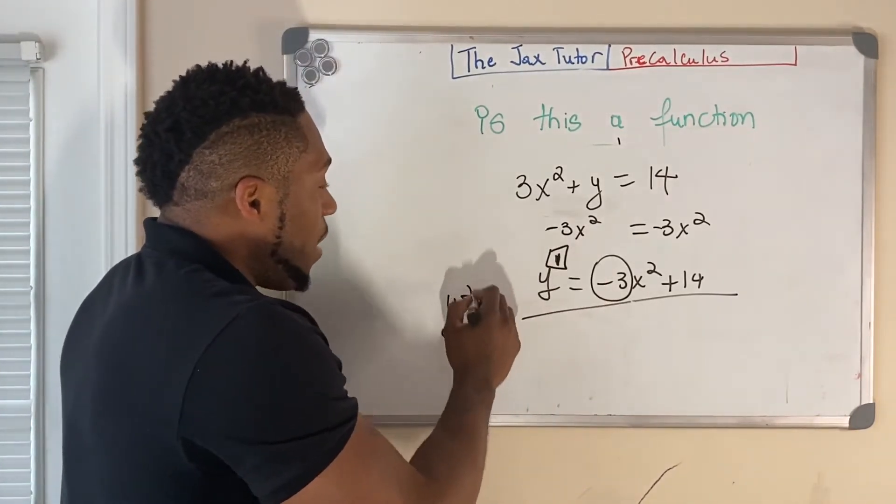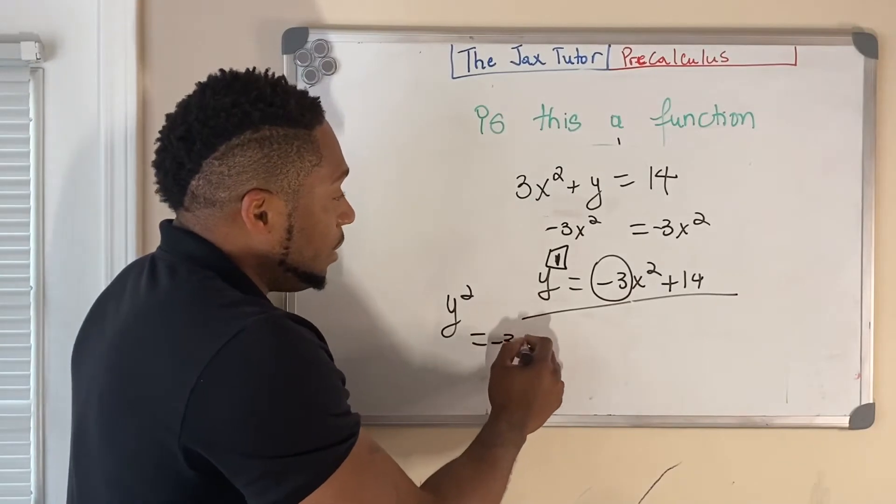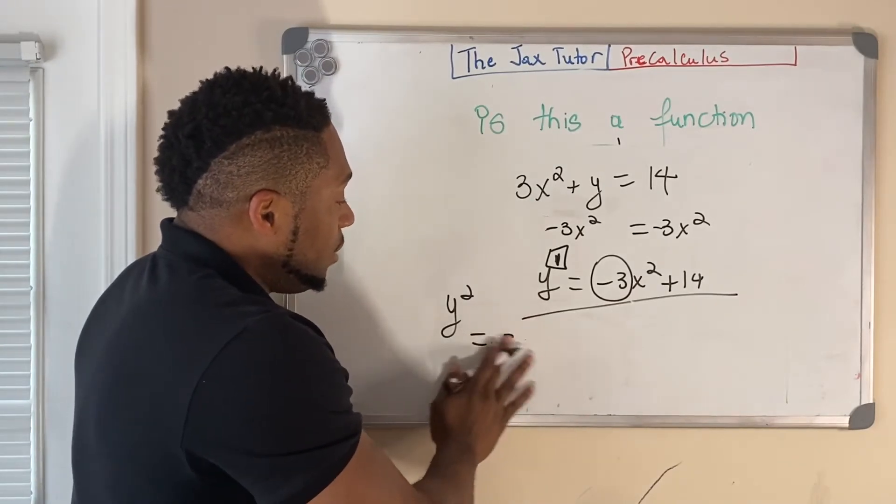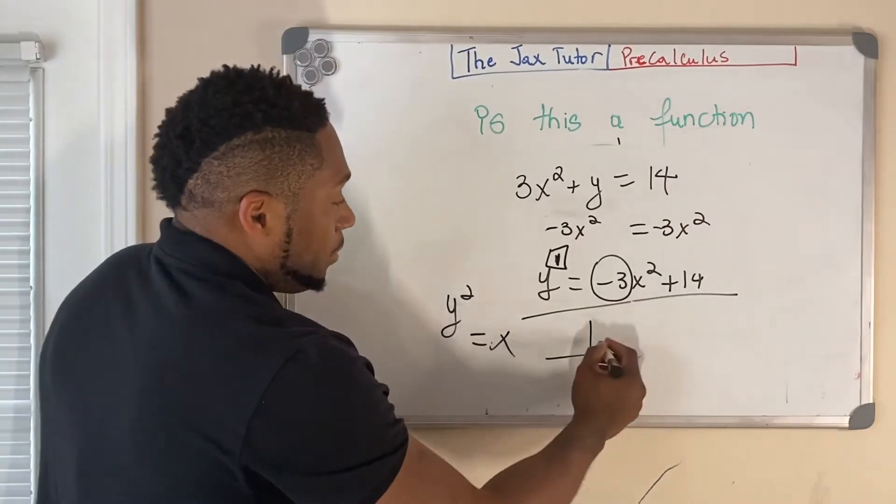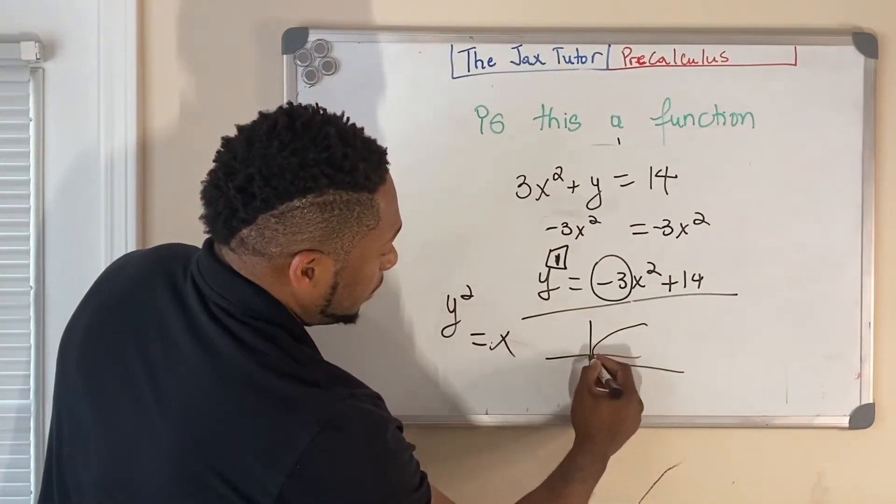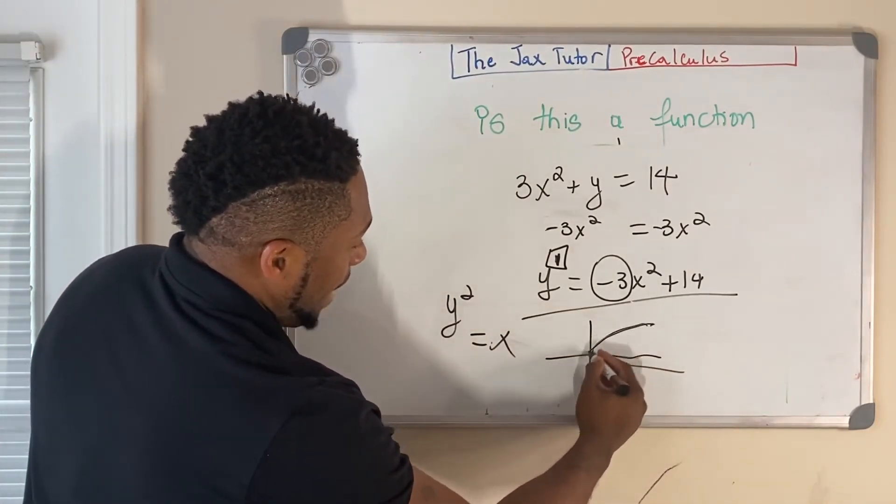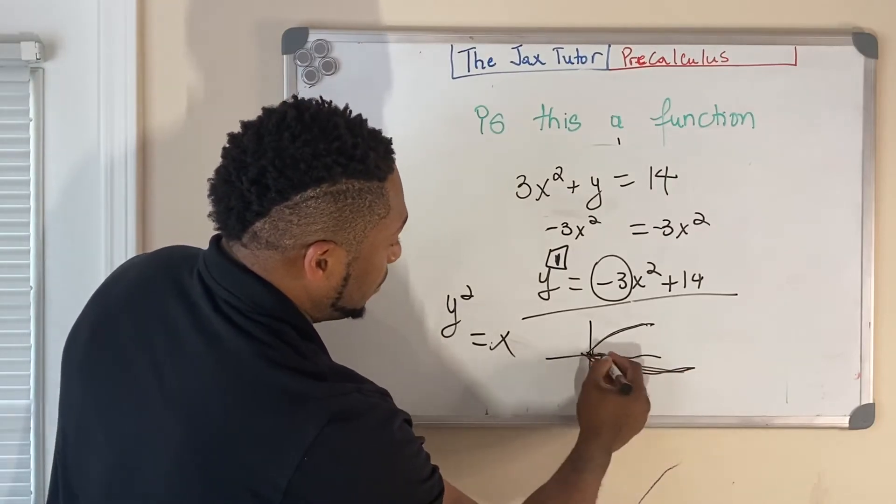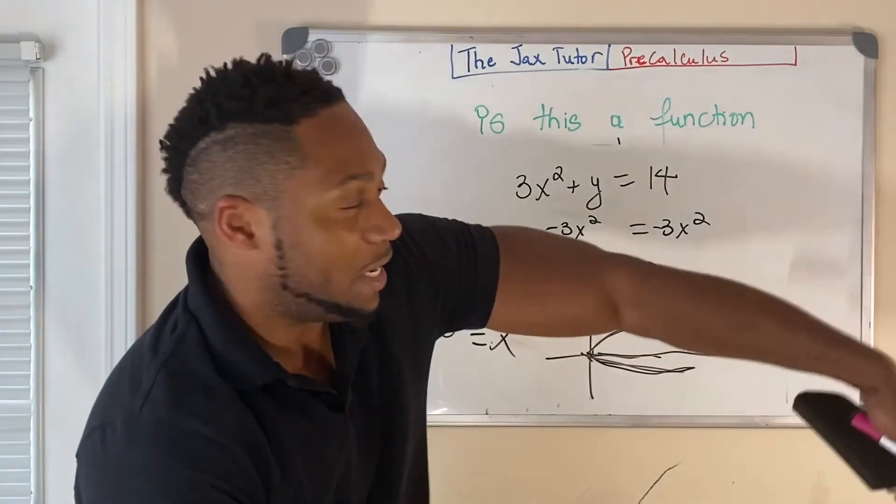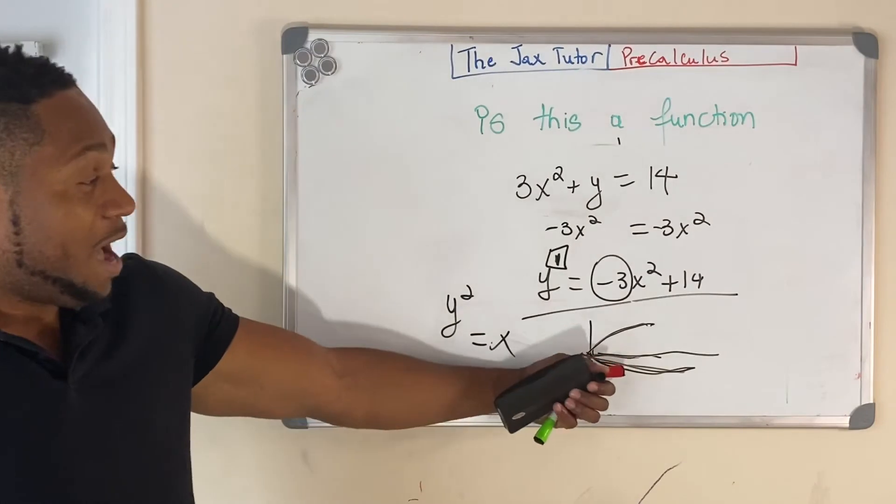So if you had y squared is equal to negative 3, so let's say you had y squared is equal to x, you know that that's going to look like a tilde. You know, this parabola right here, I guess you wouldn't call this parabola, a tilde parabola, you know, parabola laying on its side. So you would have this.